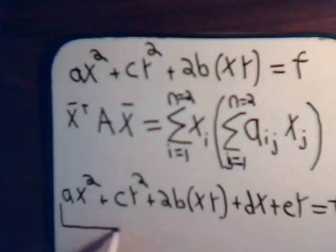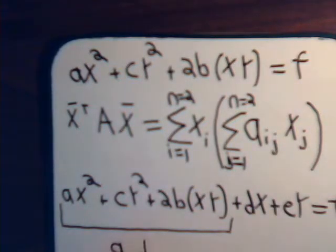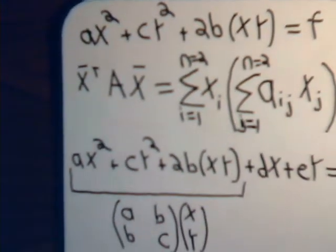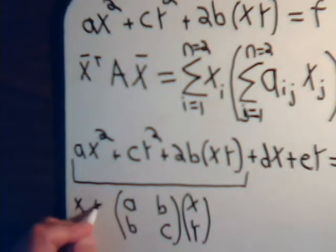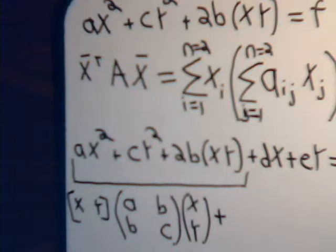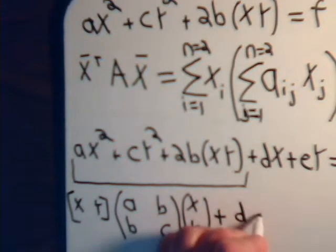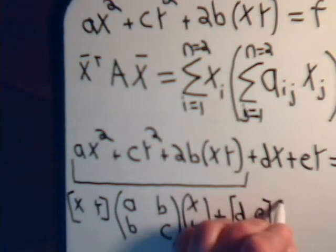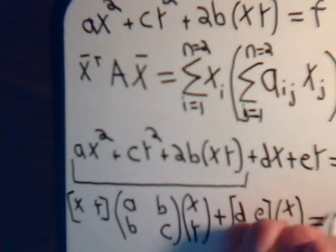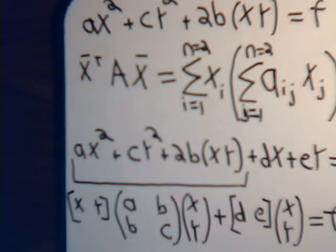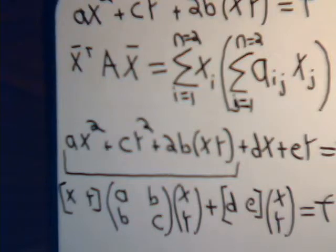Well, this part right here, that's the quadratic part, times the row vector X, Y, plus, then we could just say, write it like this, DE times X, Y, equals F. So, this is just written in quadratic form, like this, and then this, we just have DX plus EY equals some constant. And then, this type of equation can be the equation for an ellipse, or a hyperbola, or a parabola, or even a circle.